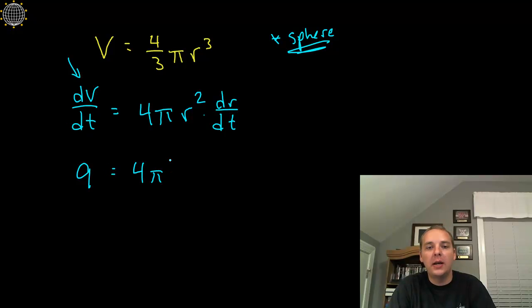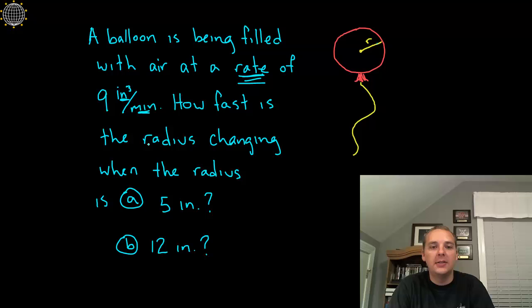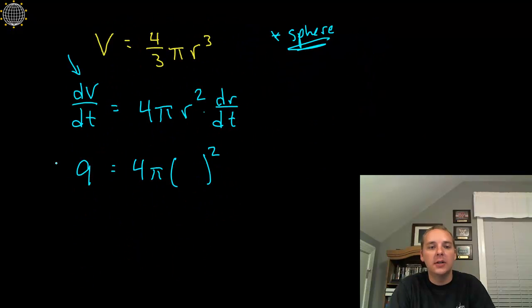Equals four pi blank squared. Alright now what, what's the radius? Well it says how fast is the radius changing when the radius is... okay so we'll do part a first, let's make r five inches. So this is actually part a, times dr dt.